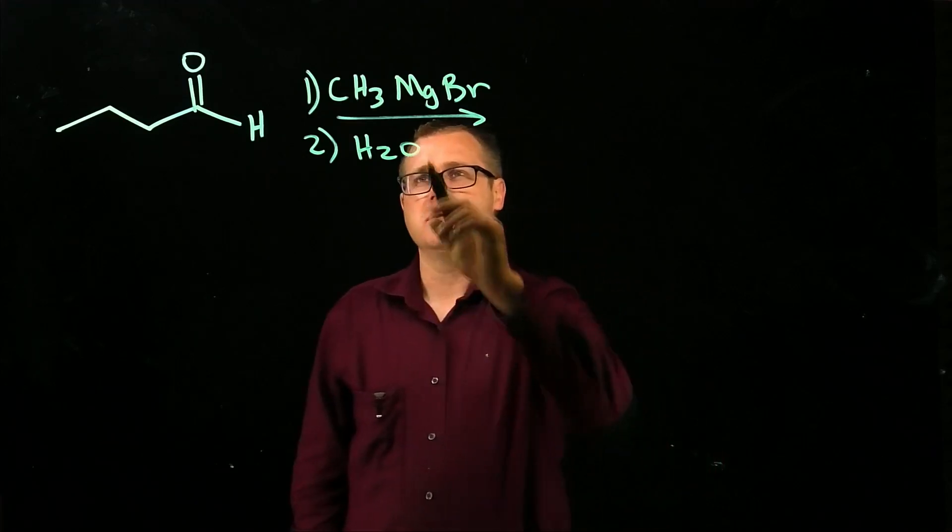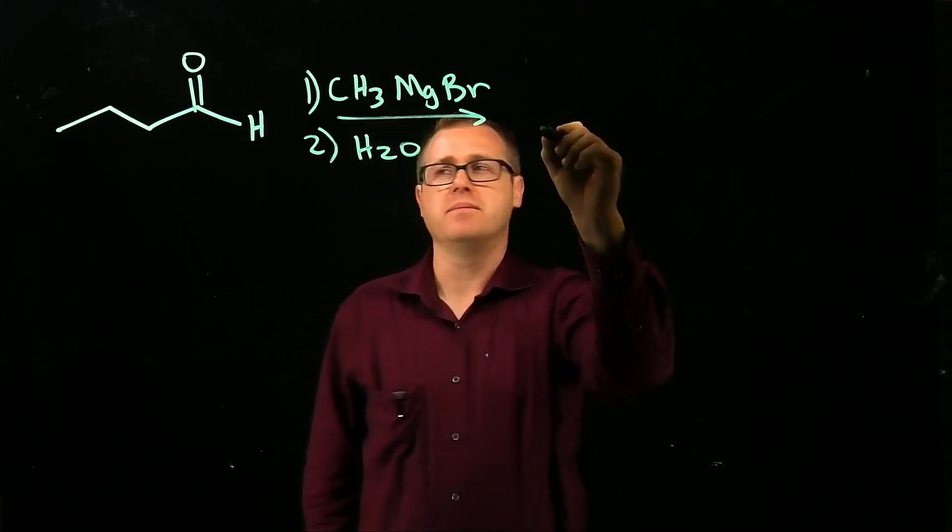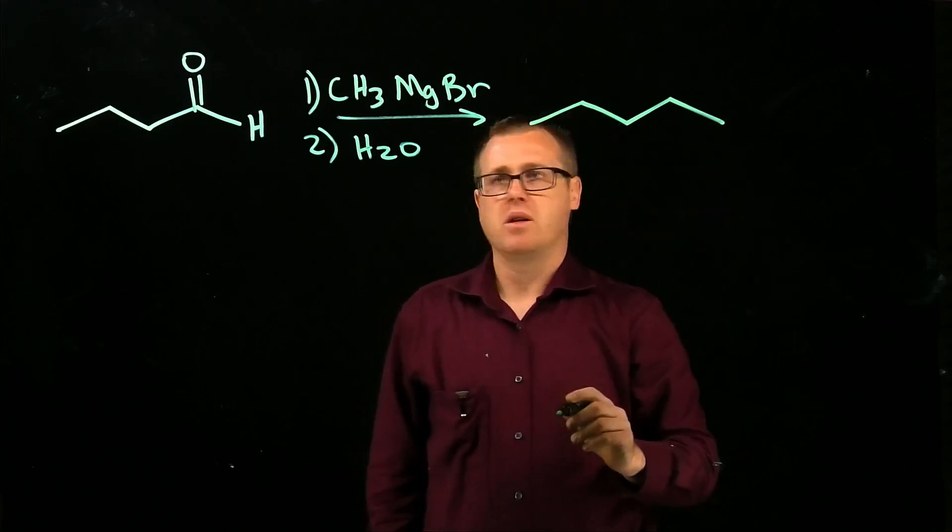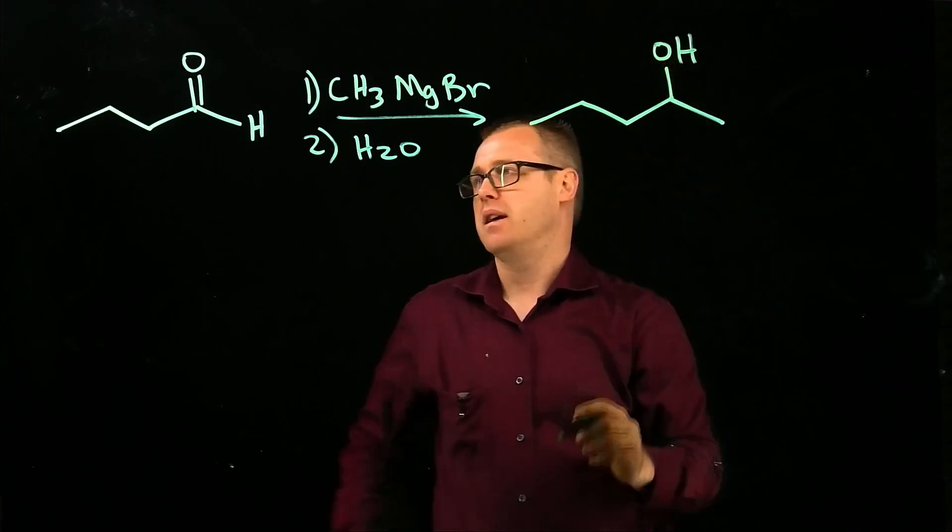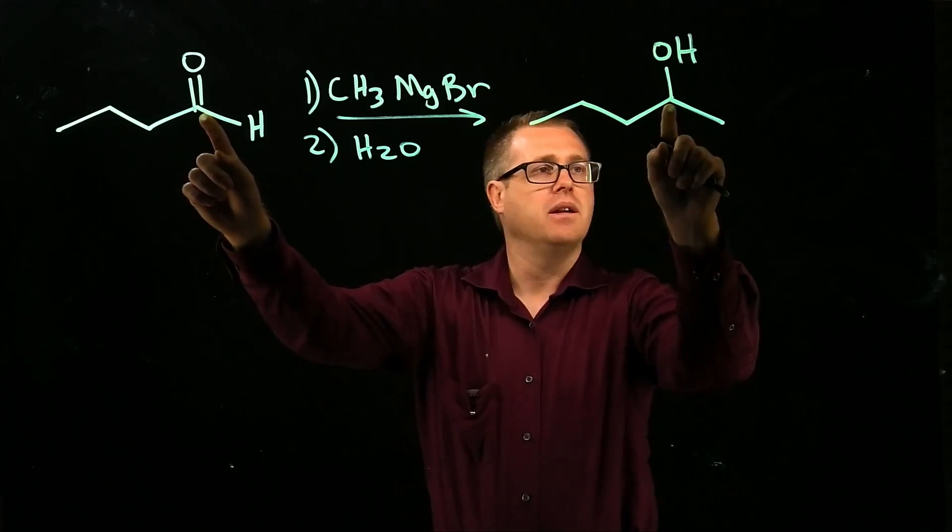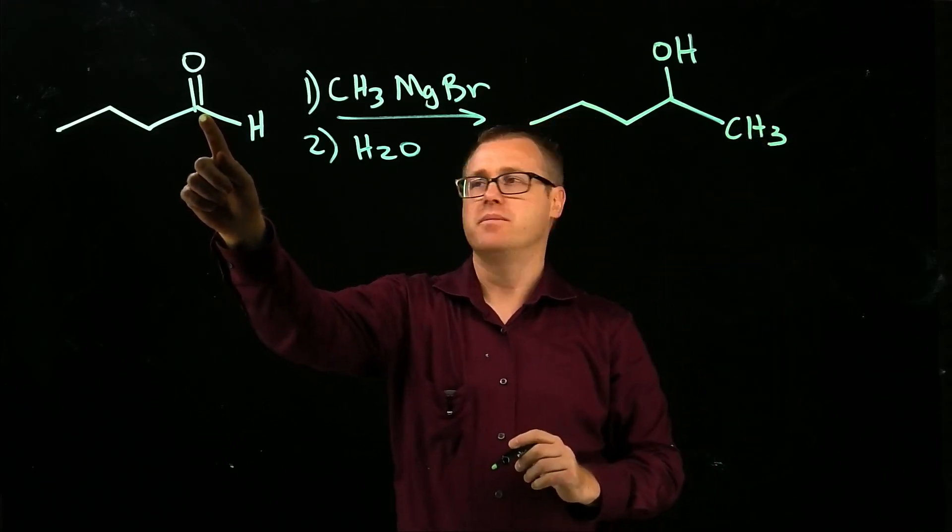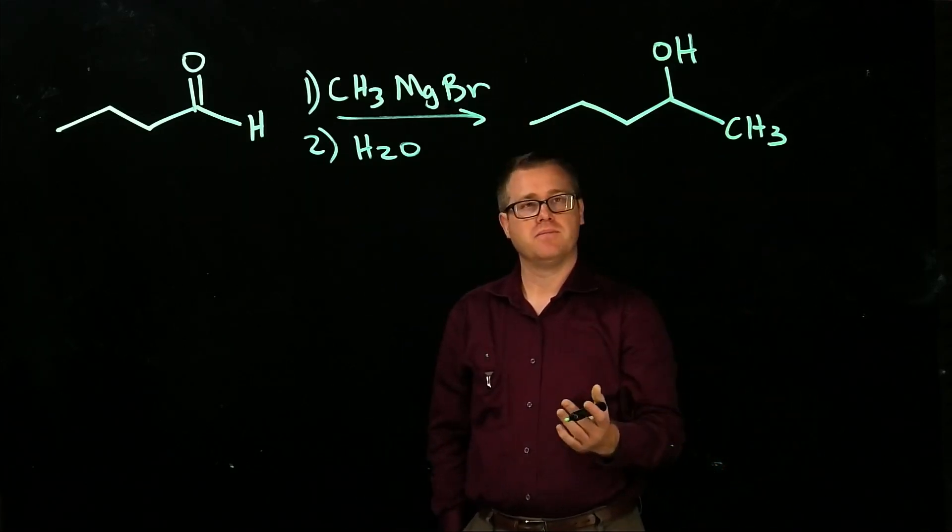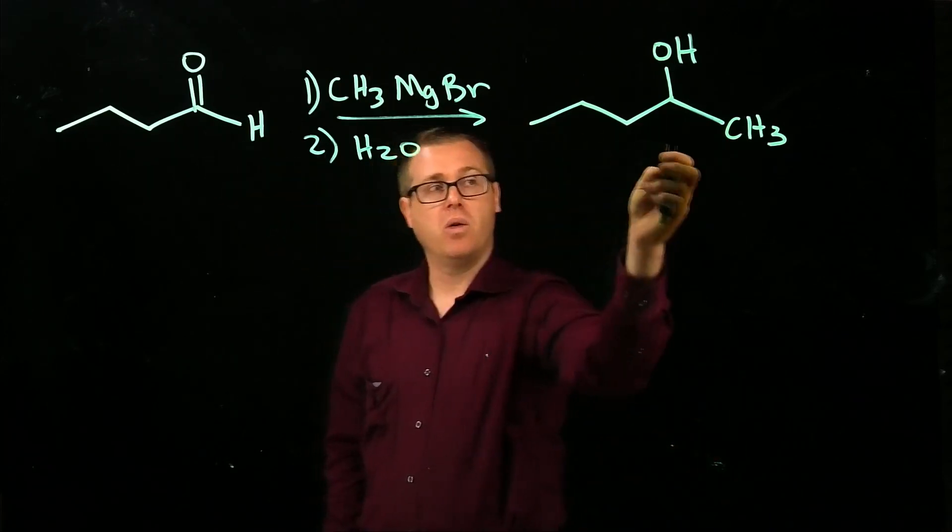What's going to happen? This methyl group right here is going to form a bond with that carbonyl carbon. So we have 1, 2, 3, 4 carbons, and then this methyl right here came from the Grignard. So we are going to generate an alcohol, and that can happen with aldehydes or a ketone.